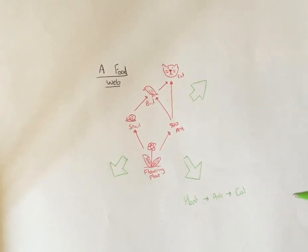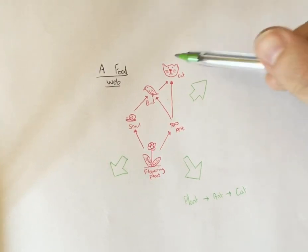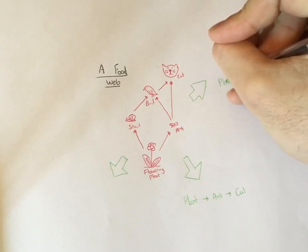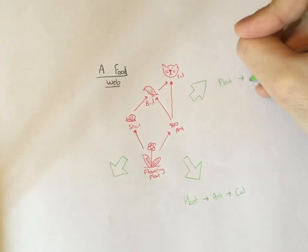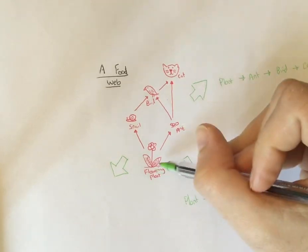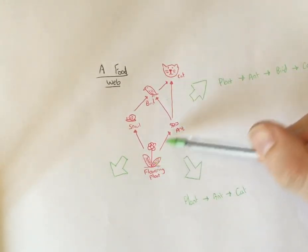But there's another food chain here as well, because instead of being eaten by the cat it might be eaten by the bird. So we also have the plant to the ant to the bird to the cat. So we've got a food chain there.